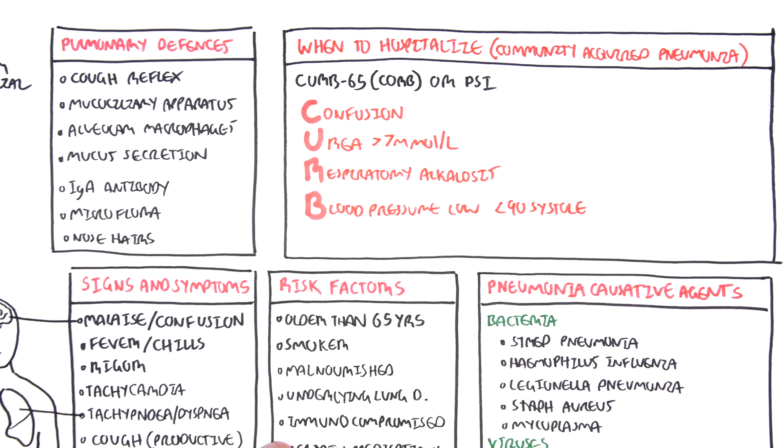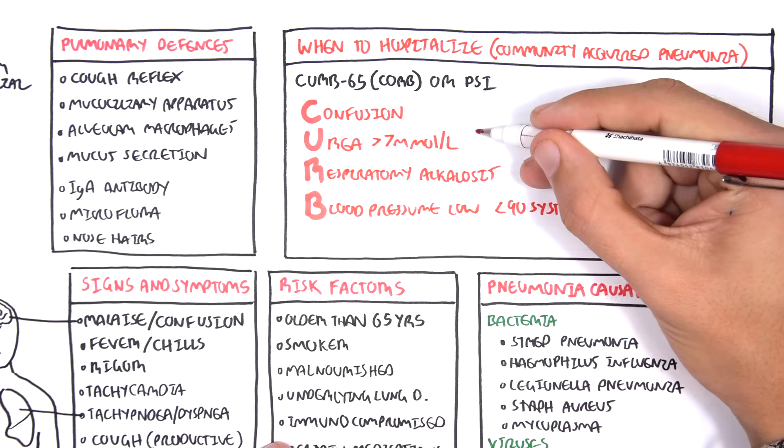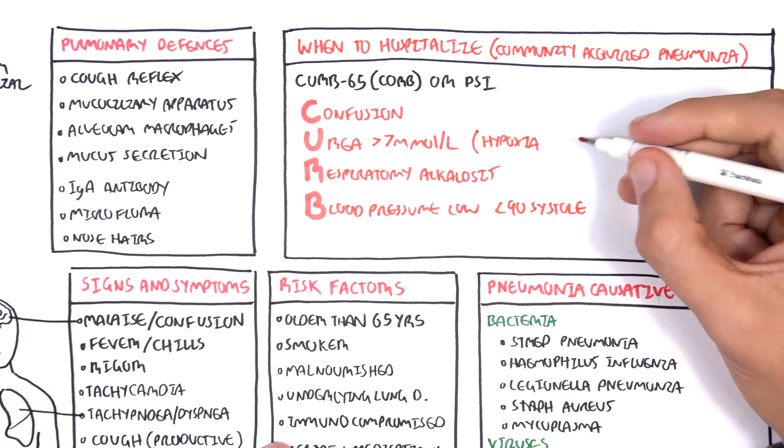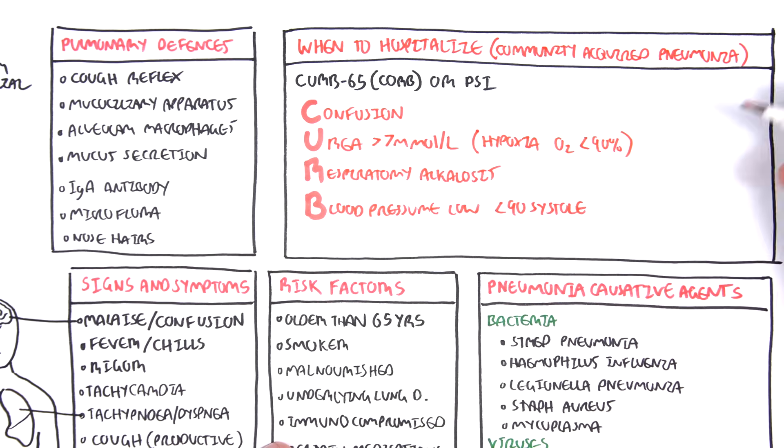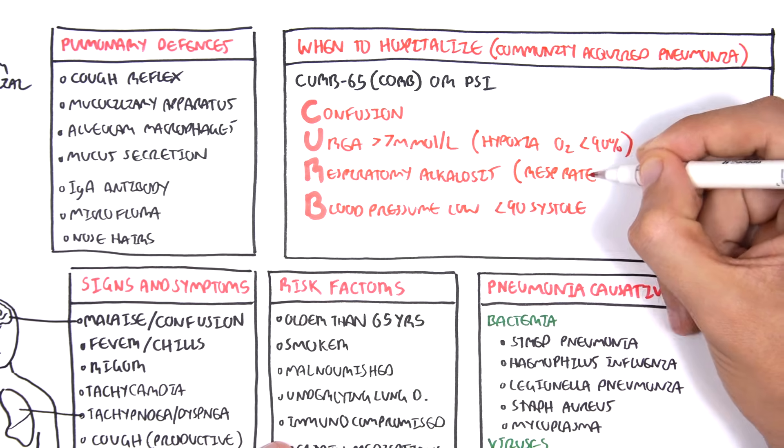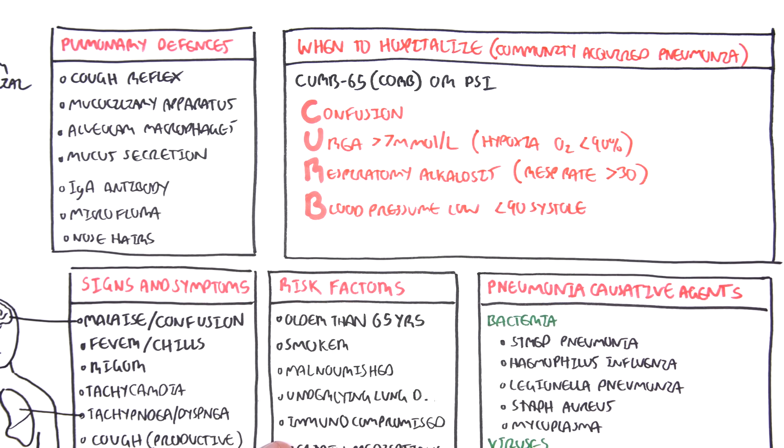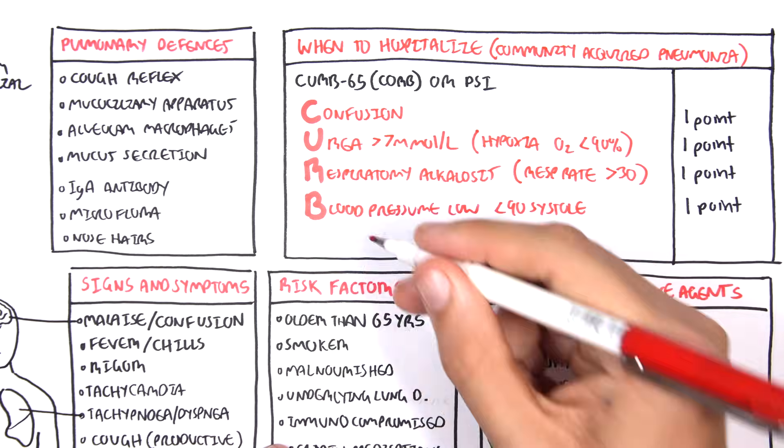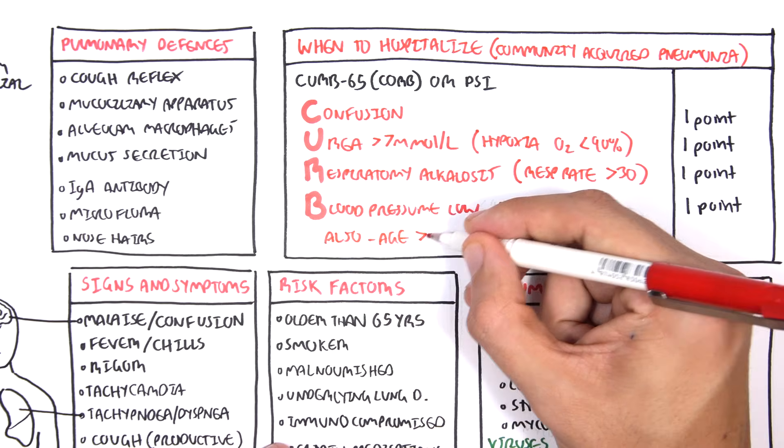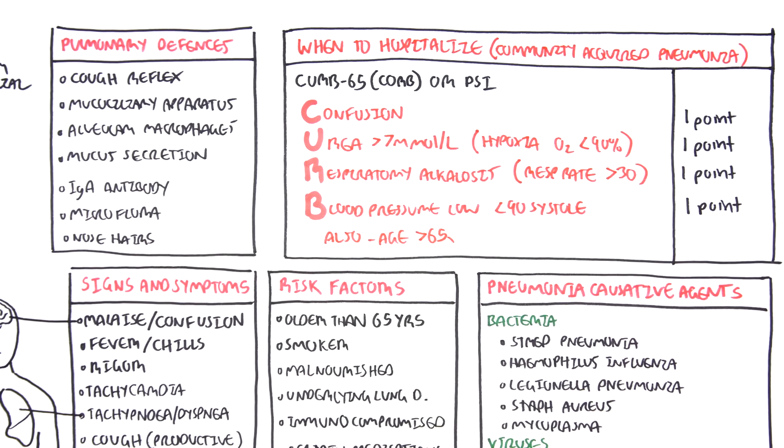R is for respiratory rate greater than 30, so tachypneic, and blood pressure is the same. So each one of these are given a score of one point. So if we tally up these points and if it is greater than 2, the patient needs to be hospitalized. That's basically it. Another factor to consider is if the patient is older than 65. This would indicate the patient would most likely need hospitalization.